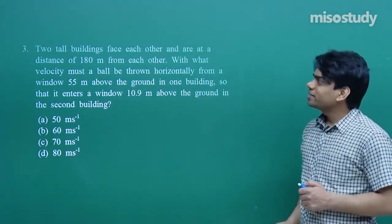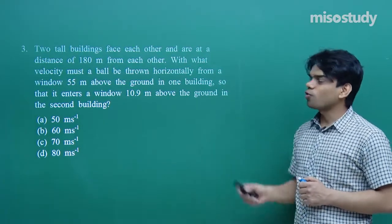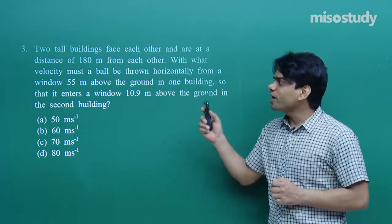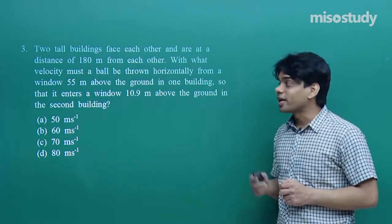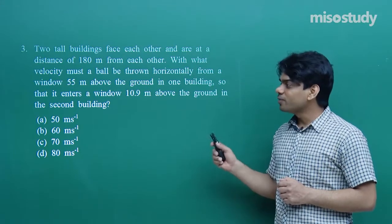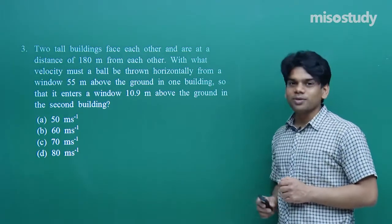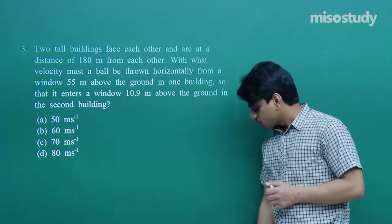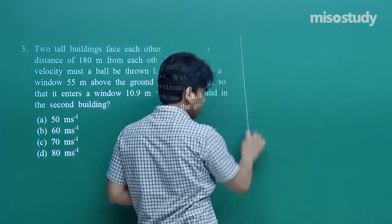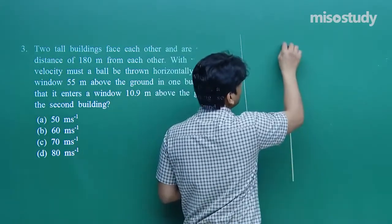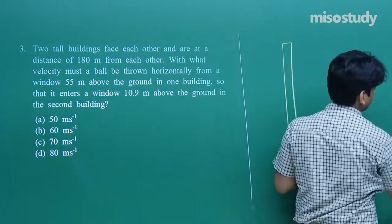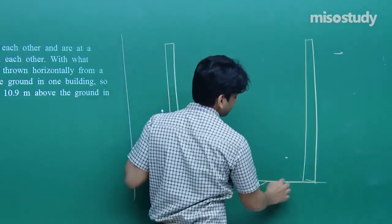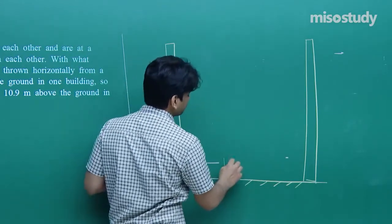Question 3: Two tall buildings face each other at a distance of 180 m. A ball is thrown horizontally from a window 55 m above the ground in one building, and must enter a window 10.9 m above the ground in the second building. We need to find the required horizontal velocity. Let me draw the scenario: two buildings separated by 180 m.